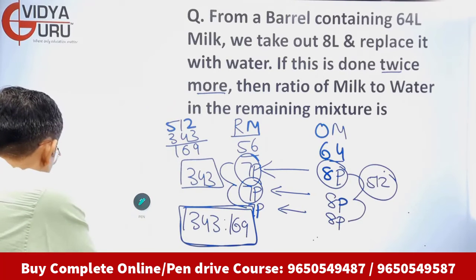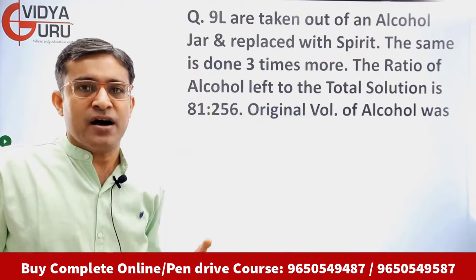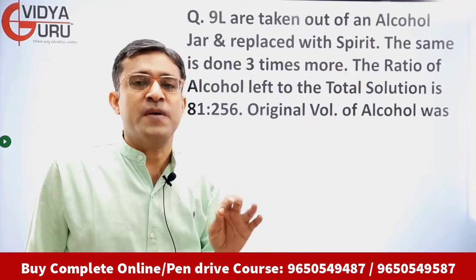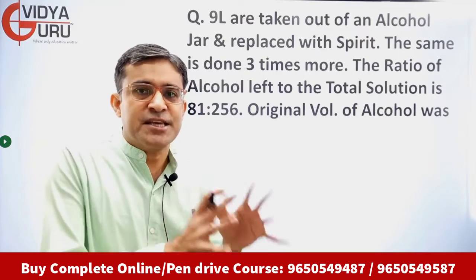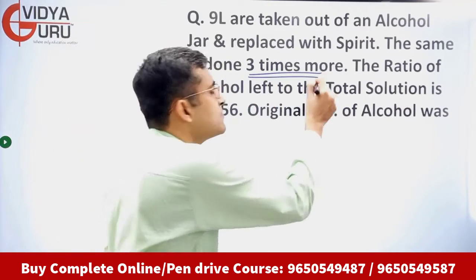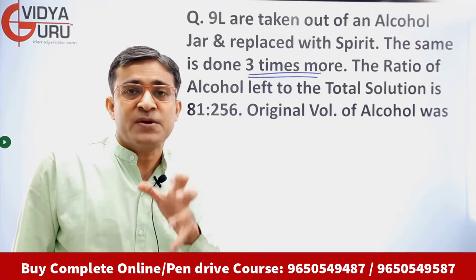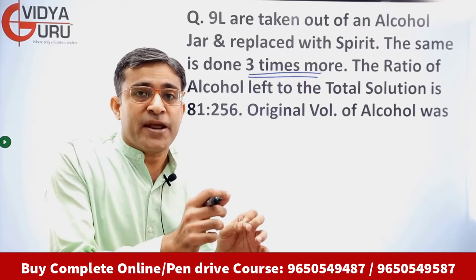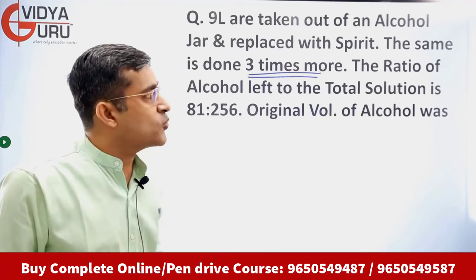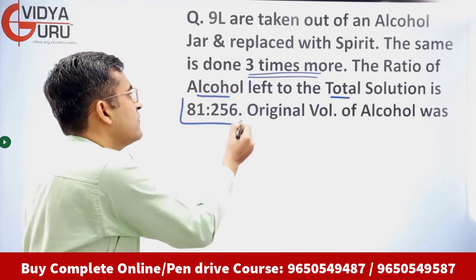Let's move to the next question. 9 liters are taken out of an alcohol jar and replaced with spirit. The same is done 3 times more, meaning this operation is performed a total of 4 times. In replacement questions, always figure out how many times the operation has been performed — here it is 4 times.